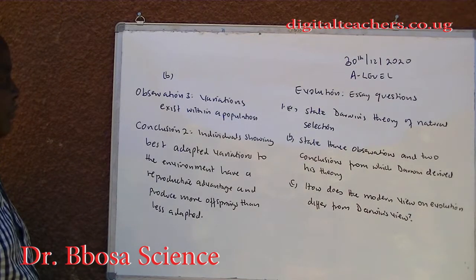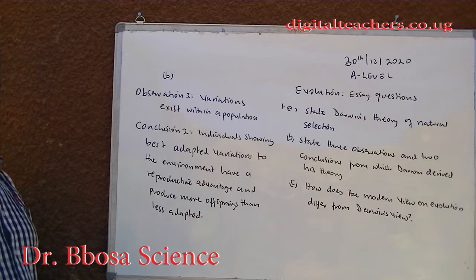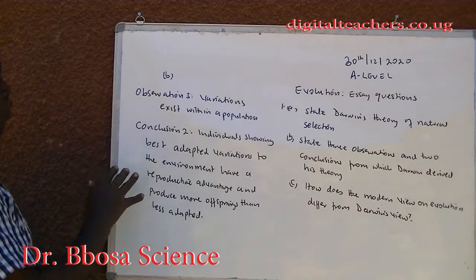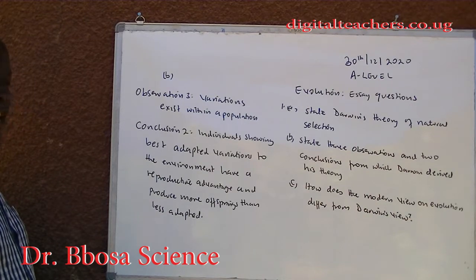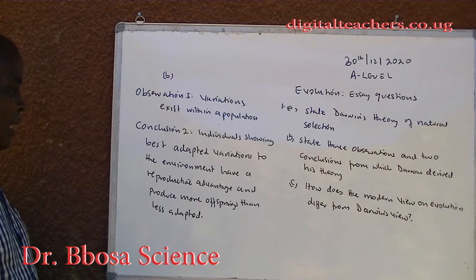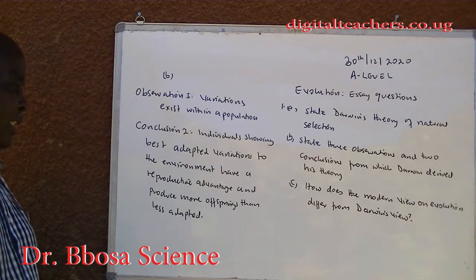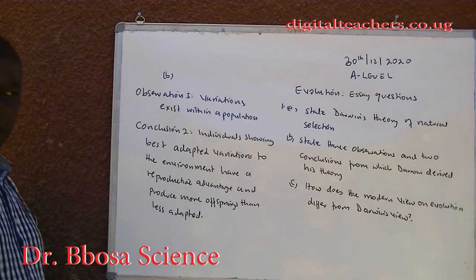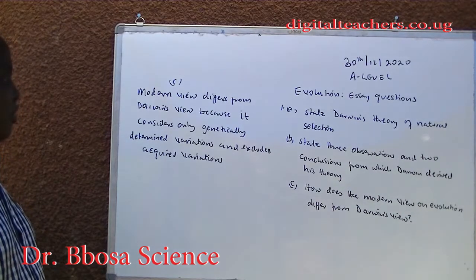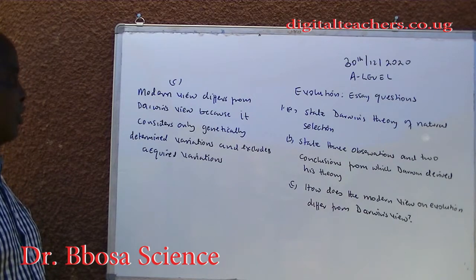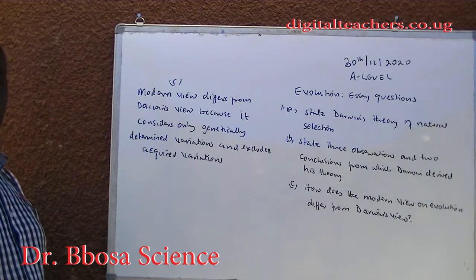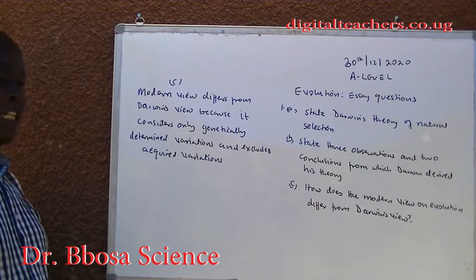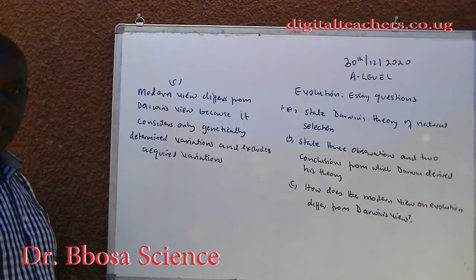Observation 3: Variations exist within a population. Conclusion 2: Individuals showing the best adaptive variations to the environment have a reproductive advantage and produce more offspring than less adapted ones. The modern view differs from Darwin's view because it considers only genetically determined variations and excludes acquired variations.